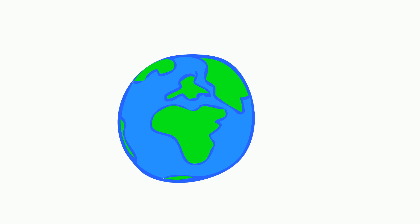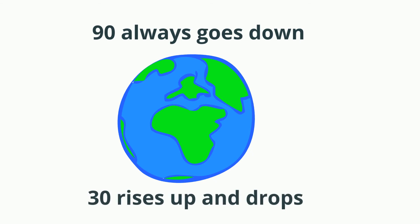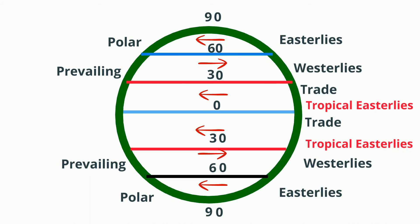90 always goes down and 30 rises up and drops. And here's what I mean. Start at 90 and it's going to go down so you draw in the north. 30 it's going to go up to 60, down to zero. And do the same in the southern hemisphere. 90 it's going to drop down, 30 is going to go up and then down.